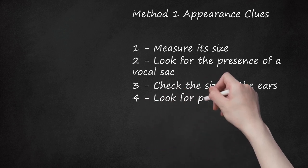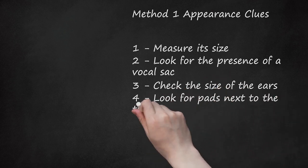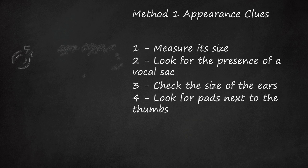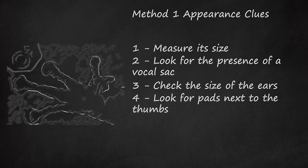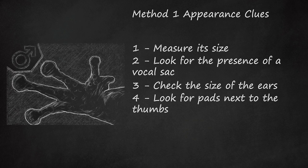Fourth, look for pads next to the thumbs. Male frogs, including tree frogs, often have special features on their hands and arms that make it easier to cling to female frogs' backs for mating purposes. For example, male frogs sometimes have a patch of rough, raised flesh on each of their thumbs.